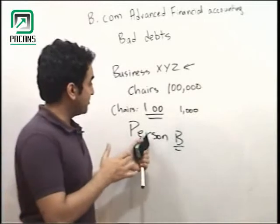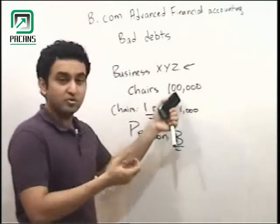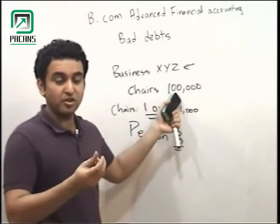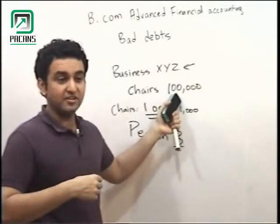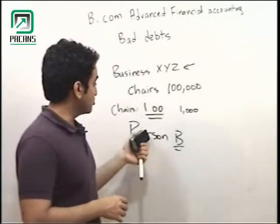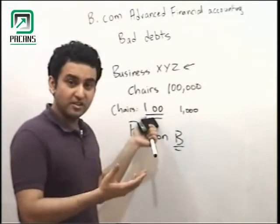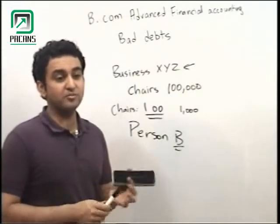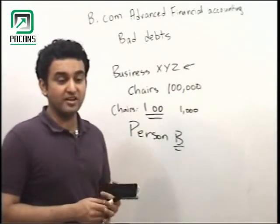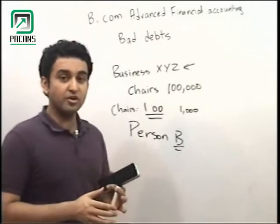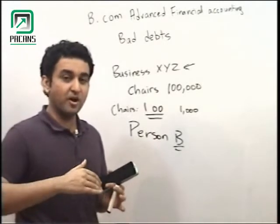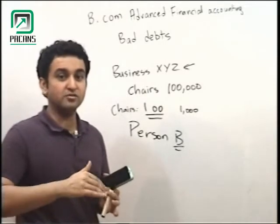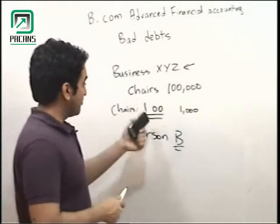When we sell on cash, bad debts cannot occur because we receive payment immediately. But when we sell on credit, payment comes in the future. People sell on credit in order to increase their sales — when you give someone something and say 'pay later,' your sales increase.